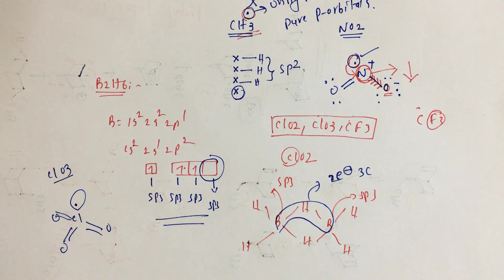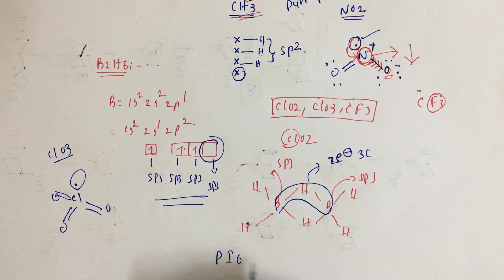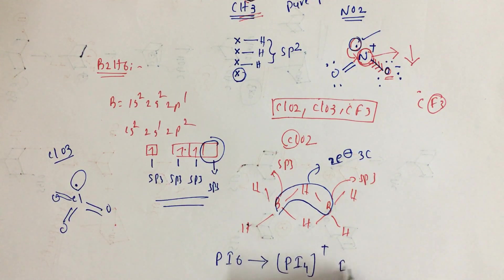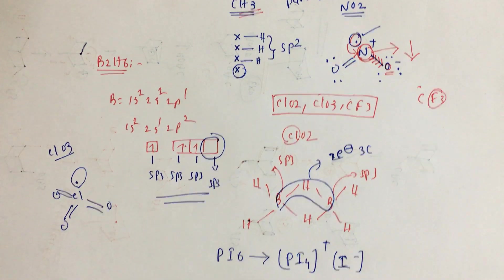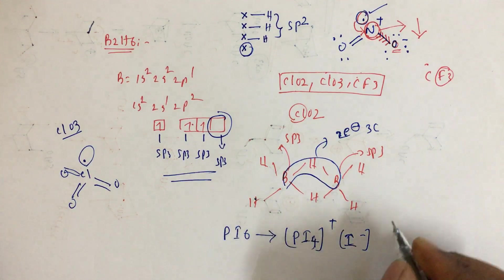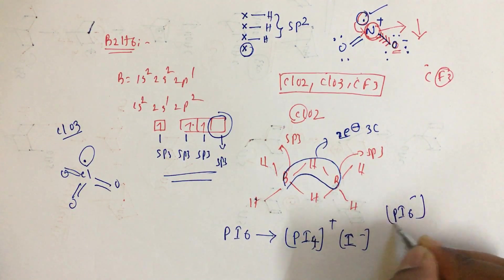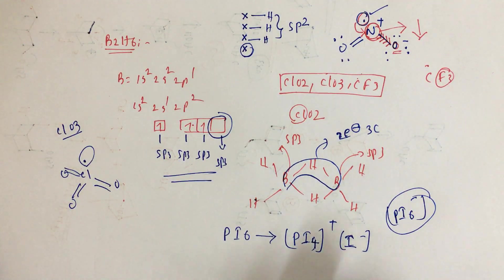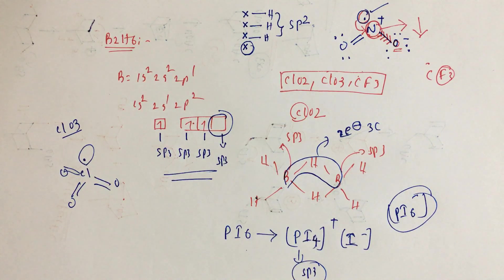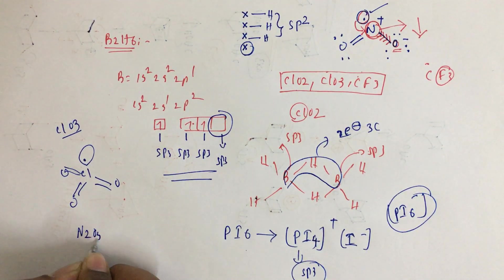A correction: PI5 in the solid state will exist as PI4+ and I-, not as PI6- as mistakenly mentioned earlier. PI6- does not exist because the size of iodine is too large. So for the solid state hybridization of PI5, the answer is sp3.